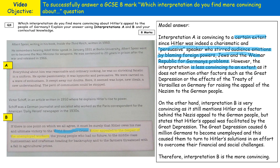On the other hand, Interpretation B is described as very convincing — and probably more convincing than Interpretation A — as it still mentions Hitler as a factor behind the Nazis' appeal but states that Hitler's appeal was facilitated by the Great Depression. This is more convincing because it gives more than one reason. The model answer also includes excellent contextual knowledge: the Great Depression caused six million Germans to become unemployed, which caused them to turn to Hitler for solutions to overcome their financial and social challenges.